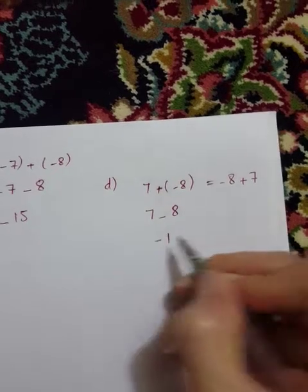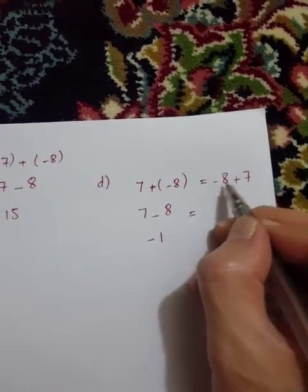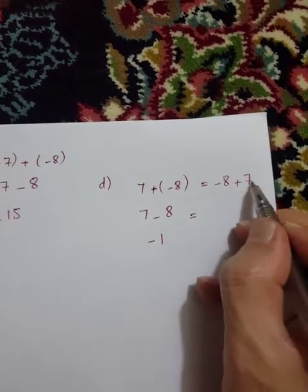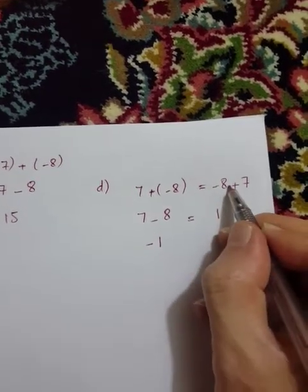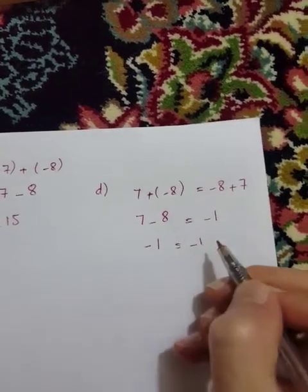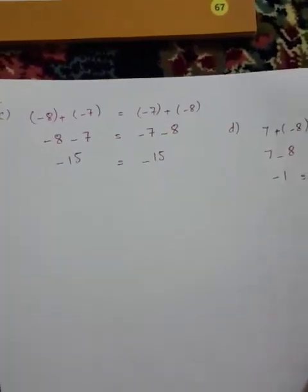Eight minus seven equals one. So minus one minus one equals minus one. This verifies part d.